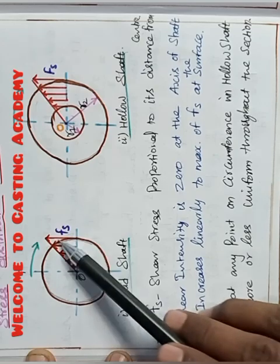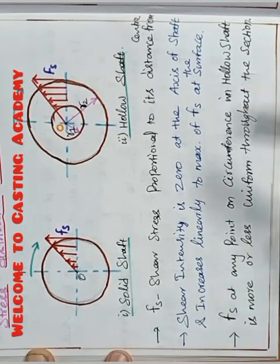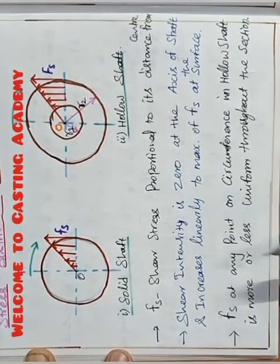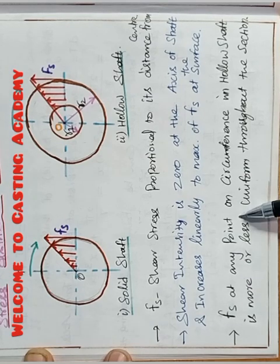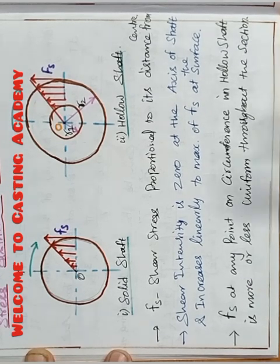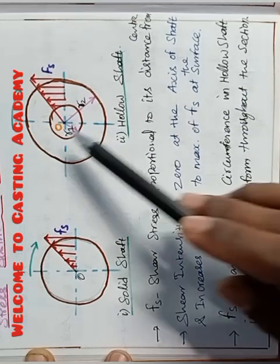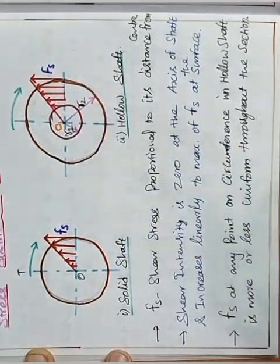From zero and maximum at the surfaces. But in case of sectional area, Fs at any point on circumference in the hollow shaft is more or less uniform throughout the section.